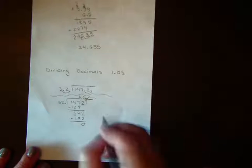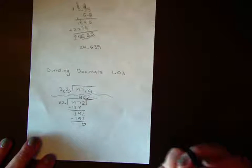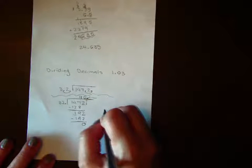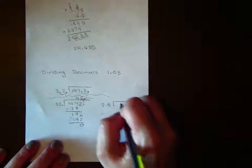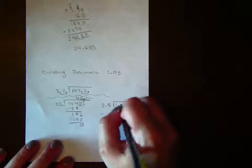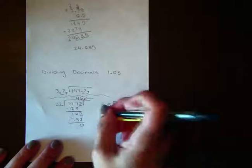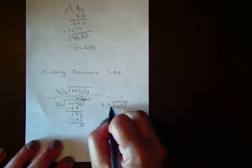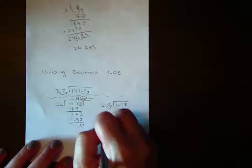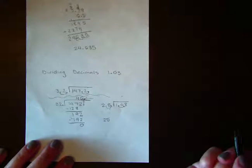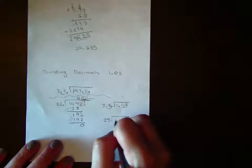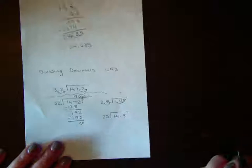Now, in some cases, your decimal point might be in your answer still. So let's take a look at 2.5 divided into 1.48. In the 2.5, we need to move it one place to make it a whole number. So it would become 25. So we're going to move our decimal point one place in the 1.48, which would make it 14.8.